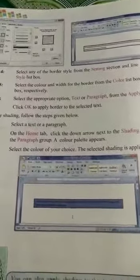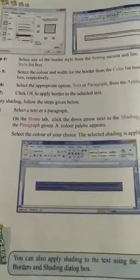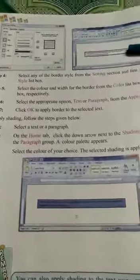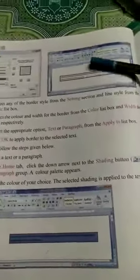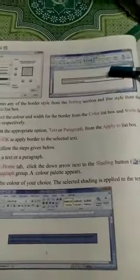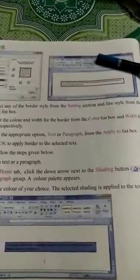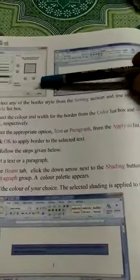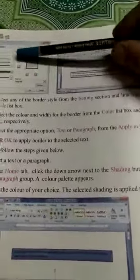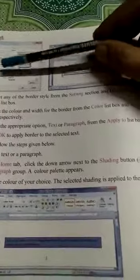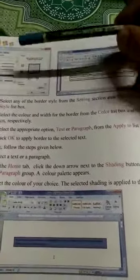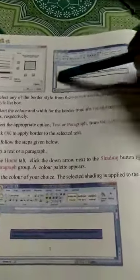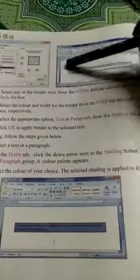First, select the paragraph, then click on Border and Shading option. We will find the Border and Shading window. We can select line style, we can select color, we can select thickness. After clicking OK, we will find the selected paragraph appear under one border.